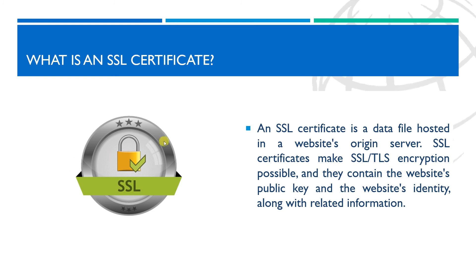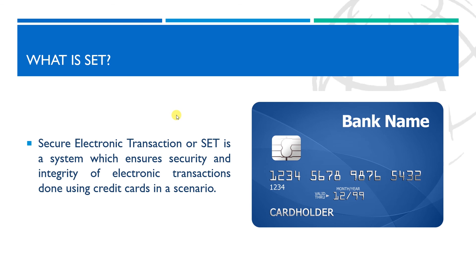Now we need to know what SET is. The Secure Electronic Transaction, or SET, is a system that ensures the security and integrity of electronic transactions done using credit cards. SET is not a payment system itself, but rather a secure protocol applied to those payments. It uses different encryption and hashing techniques to secure payments over the internet.